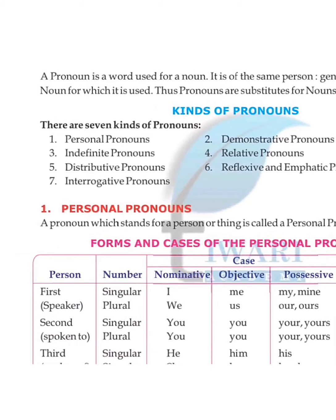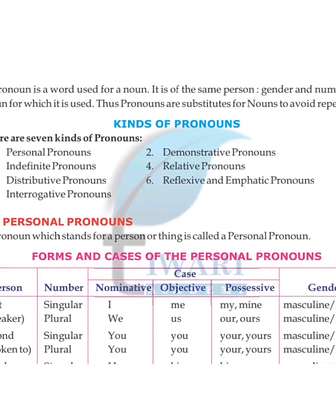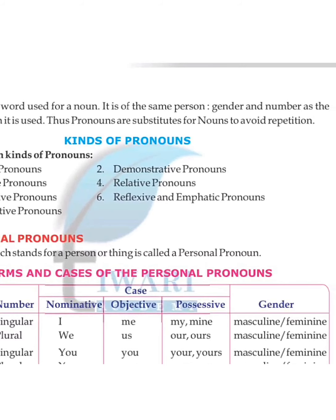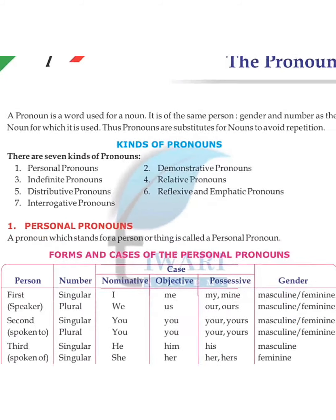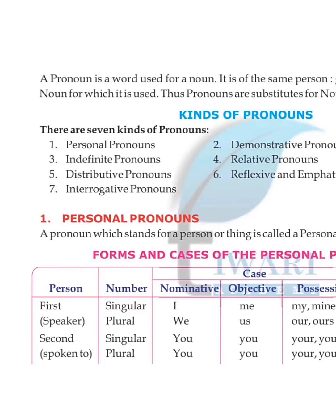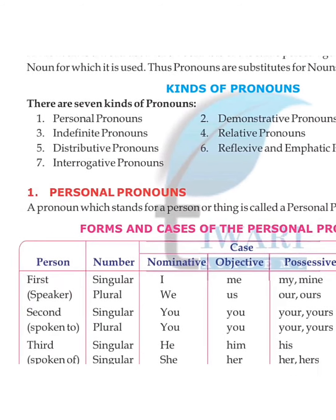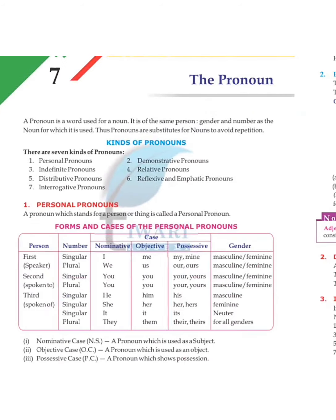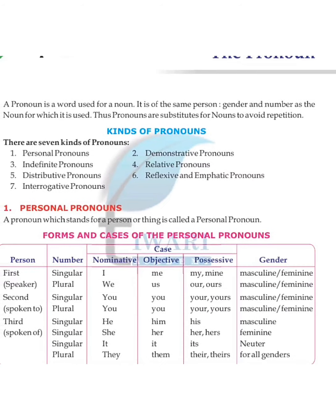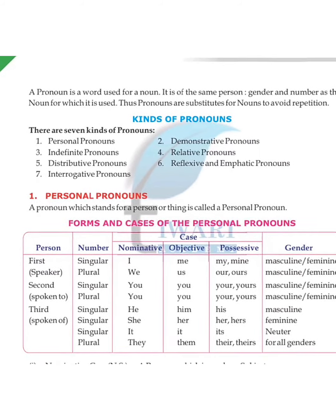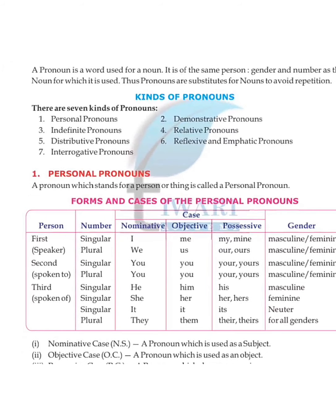Pronouns are substitutes for nouns to avoid repetition. There are seven kinds of pronouns: personal pronouns, demonstrative pronouns, indefinite pronouns, relative pronouns, distributive pronouns, reflexive and emphatic pronouns, and interrogative pronouns.